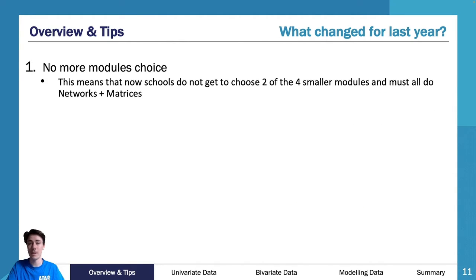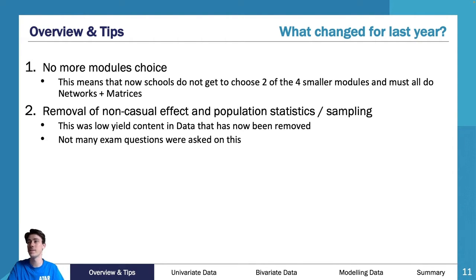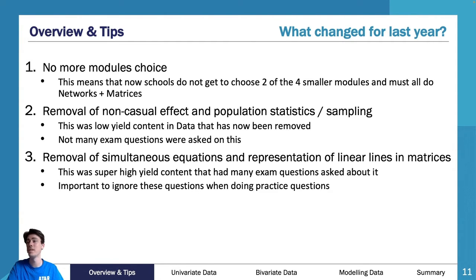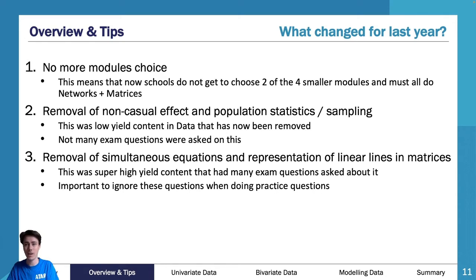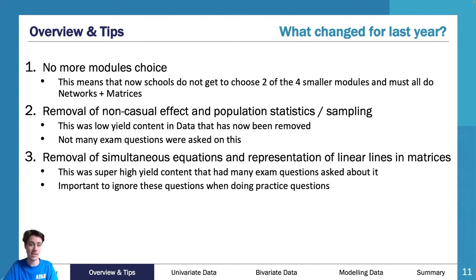To solidify what has changed: there is no more module choice, which we've already discussed. There was removal of non-causation effect and population statistics — if you see those in older materials, don't worry, they've been removed. There was also removal of simultaneous equations in matrices. That was a massive part of matrices, so in older practice exams you'll commonly see simultaneous equations and representation of linear lines — don't worry, it's been removed.